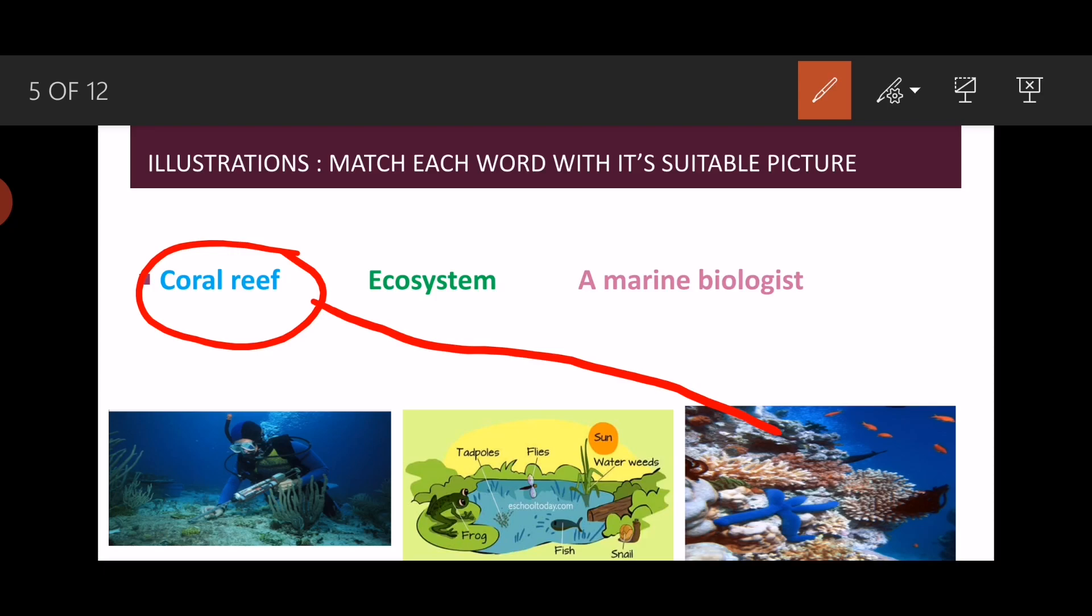Now ecosystem. I said the meaning of ecosystem is the living things that live in the sea, everything that lives in the sea. We call this ecosystem. Yes, this is it. The last one, a marine biologist, is someone who is interested in studying the living things we find in the sea. Yes, this is it. Well done.